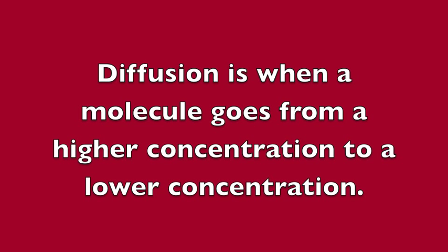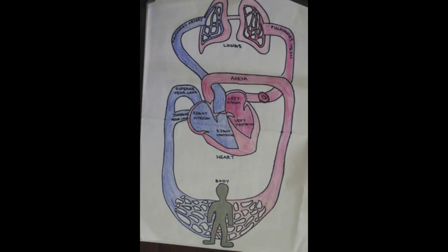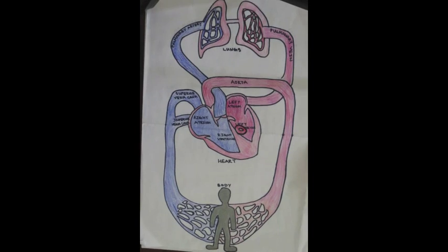I exit the lung capillaries and find myself inside the pulmonary vein. I end up in the left atrium of the heart. I push through the mitral valve and end up in the left ventricle and slide through the aortic valve and then I find myself in the aorta on the way to the body's capillaries.